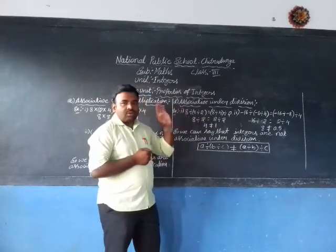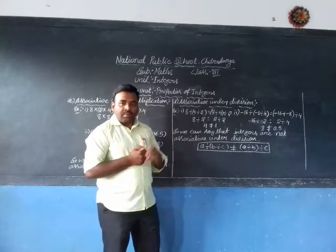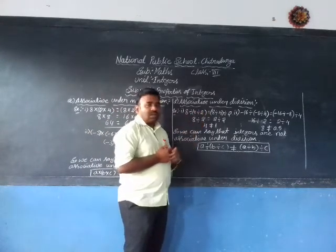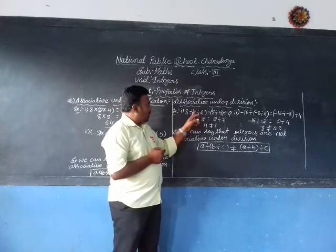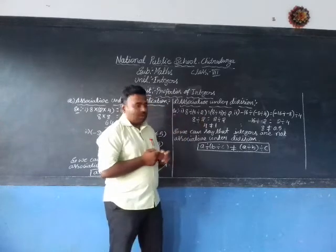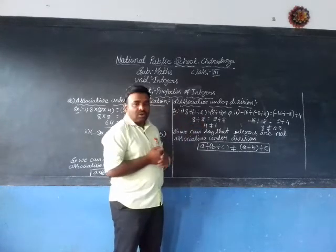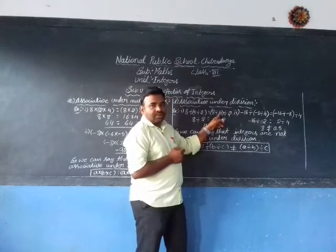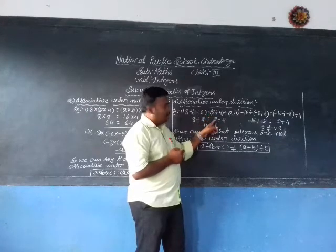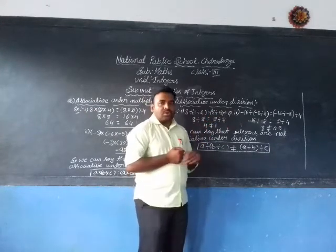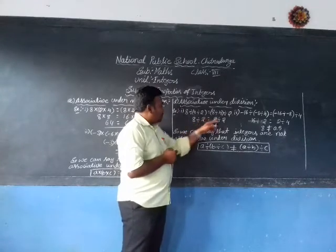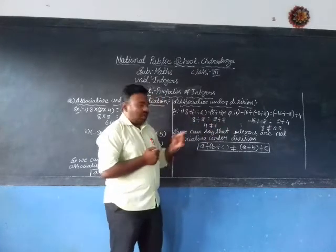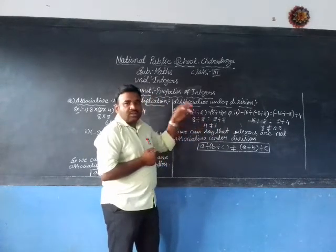Now use the order of operations. First, carry out the brackets. On the left hand side, 4 ÷ 2 = 2, so 8 ÷ 2 = 4. On the right hand side, 4 ÷ 2 = 2, so 8 ÷ 2 = 4. Wait — the groups give different intermediate values: left side gives 8 ÷ (4÷2) = 8 ÷ 2 = 4, and right side gives (8÷4) ÷ 2 = 2 ÷ 2 = 1. The results are not the same.